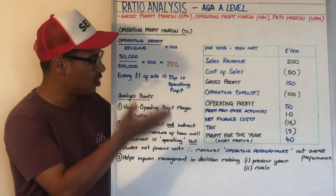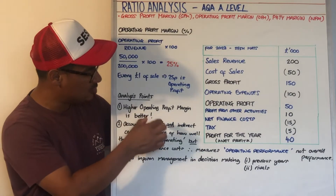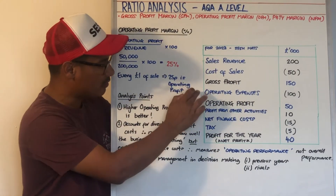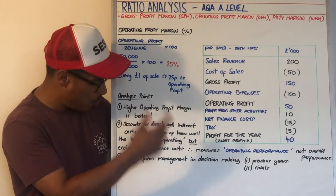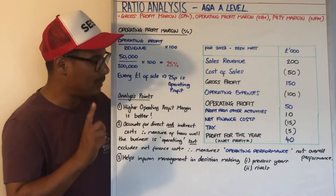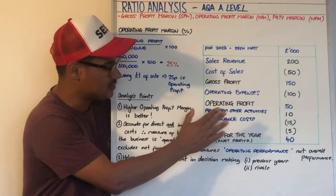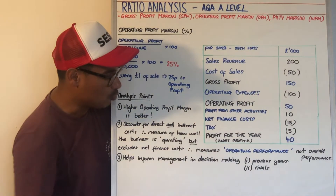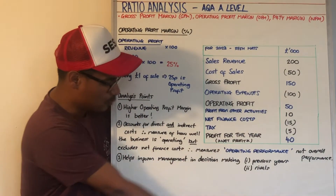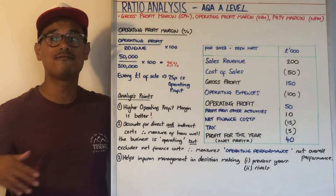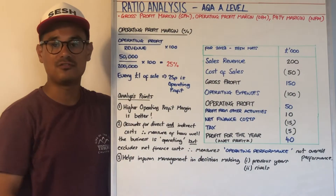Analysis points for operating profit margin: the higher the better. This time it accounts for direct costs (cost of sales) and also indirect costs (operating expenses). It's therefore a measure of how well the business is operating day-to-day, but it's not a measure of overall performance, because it excludes profit from other activities, financing costs, and tax. It helps inform management decision making when comparing to rivals and previous years.